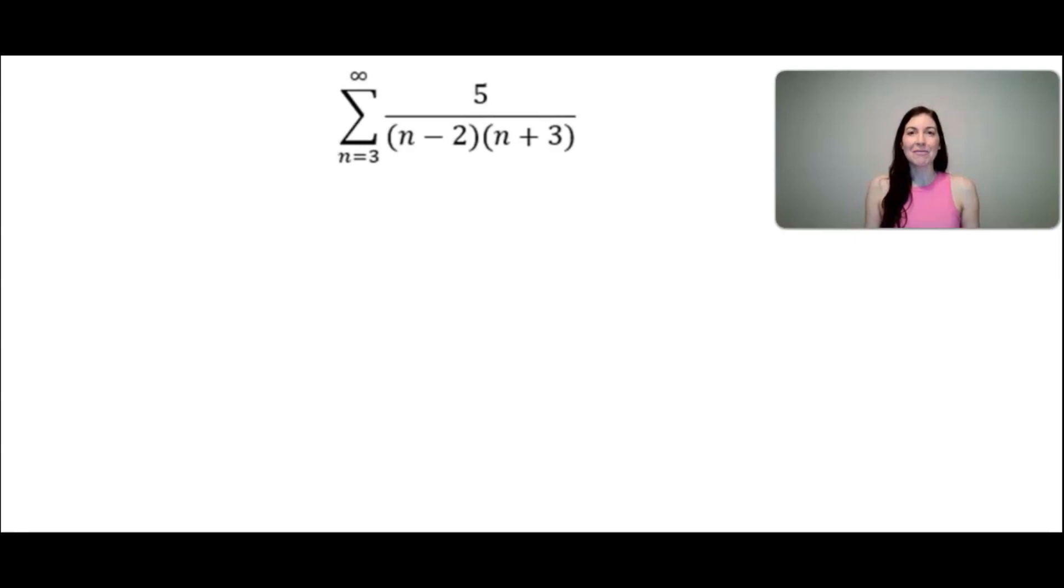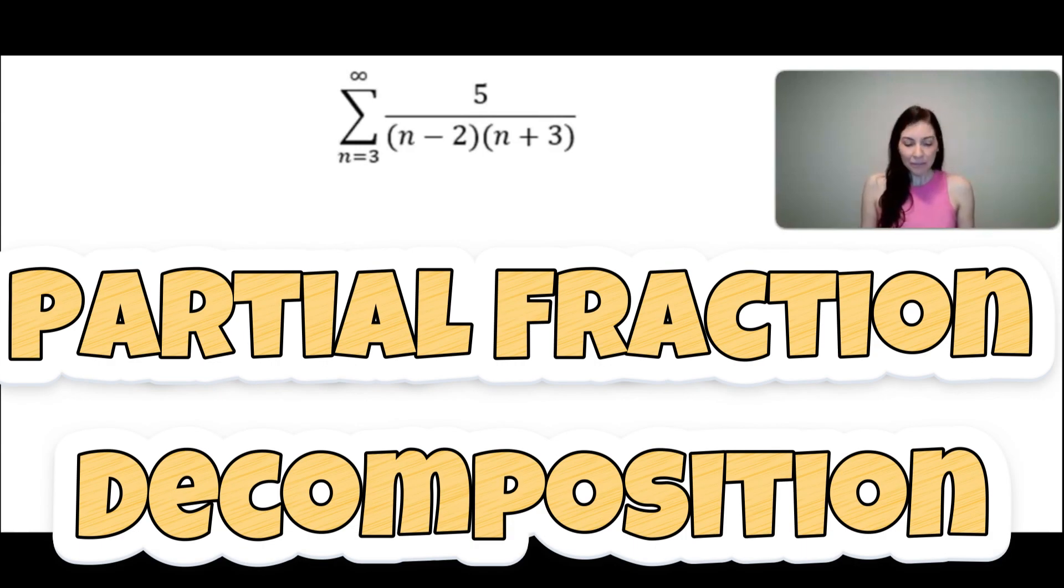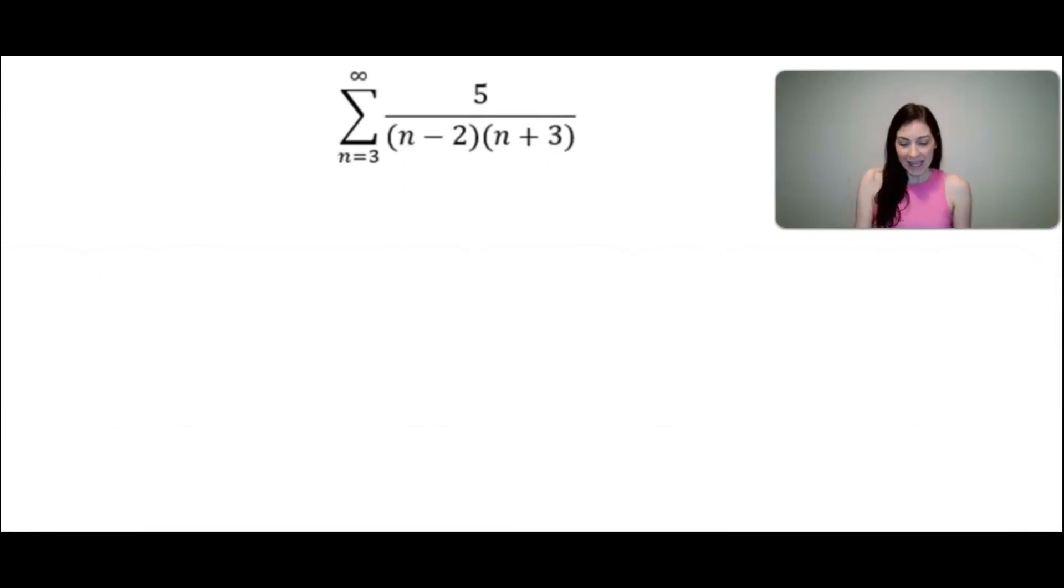Let's go ahead and get started with this following series. We would like to sum up an infinite amount of terms from the third term to the infinite term of 5 divided by n minus 2 times n plus 3. The first thing we have to do is what's called partial fraction decomposition. What I mean by that is that the fraction 5 over (n-2)(n+3) can be written as the sum of two fractions.